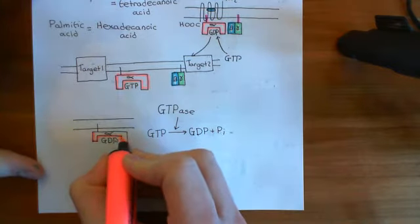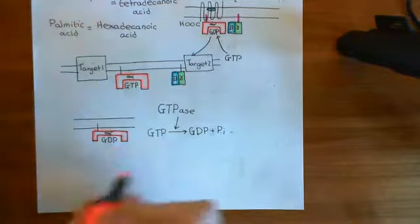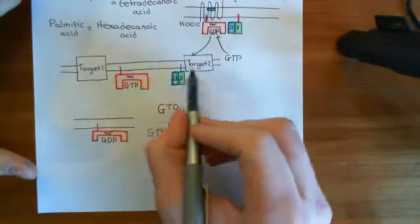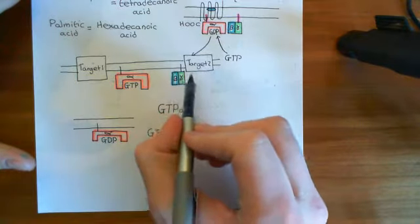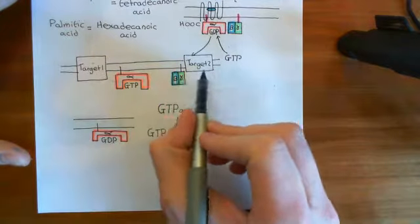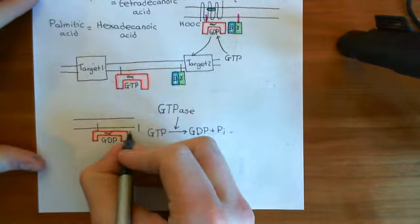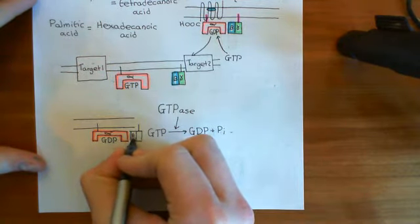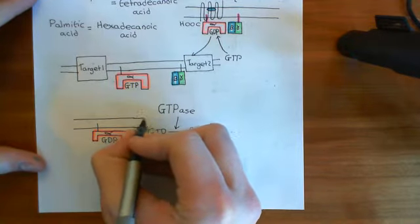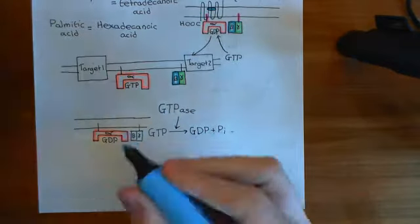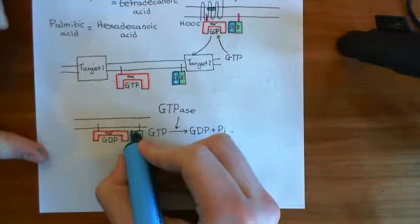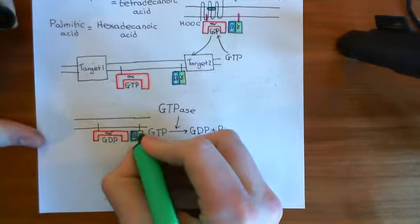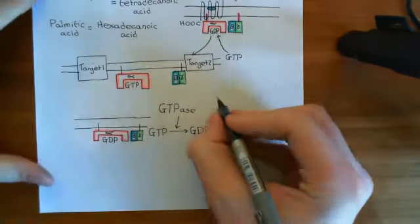Once the alpha subunit has GDP bound again, it can re-associate with the beta-gamma complex. It scours the inner leaflet of the plasma membrane, finds the beta-gamma complex, pulls it off its target, and the heterotrimeric G protein reforms. This cycle — from inactive heterotrimer back to the heterotrimer — is known as the G protein cycle.